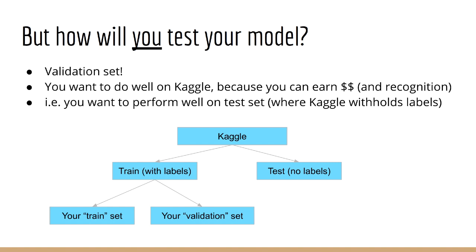In order to do that, you have to pretend to evaluate your model on unseen data by splitting the train set that Kaggle gives you into train and validation sets. For this data, you do have all the labels, and so you can calculate both the train and validation accuracy.